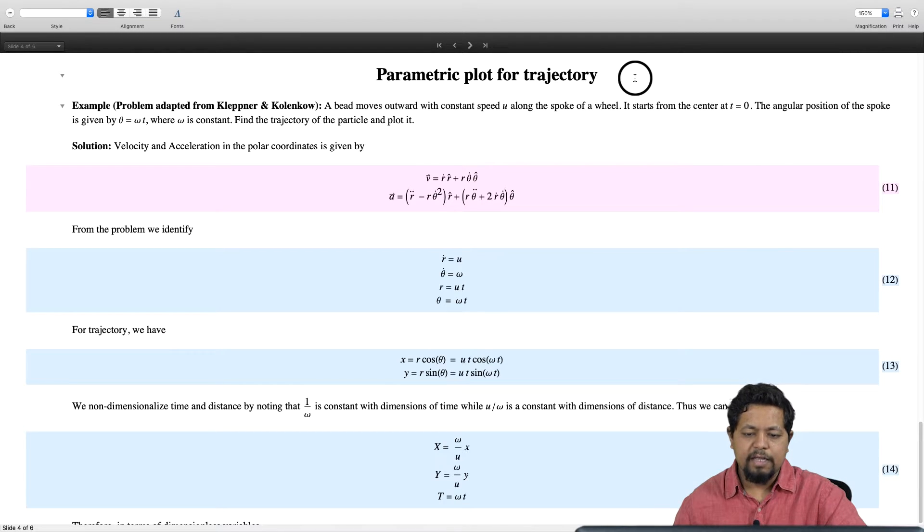Okay, let us continue our journey on visual thinking. The last two examples we worked with Cartesian coordinates, and this time we will take an example where we work with polar coordinates.